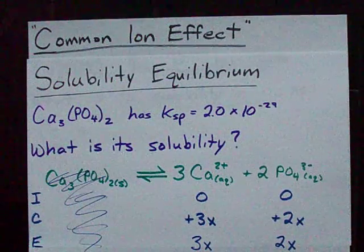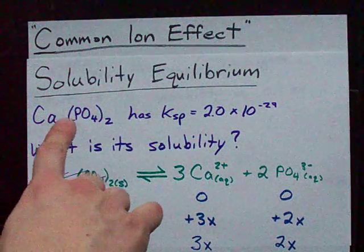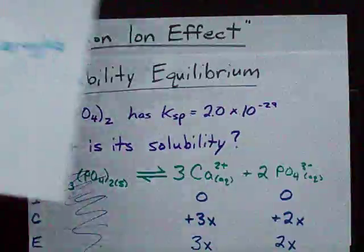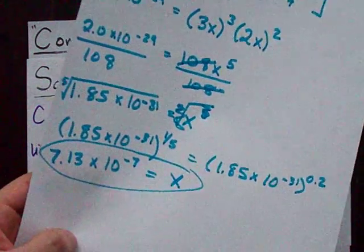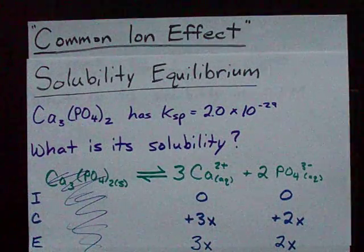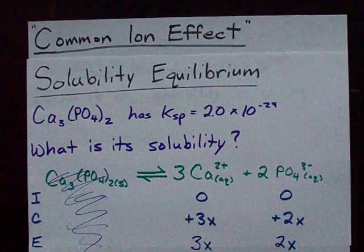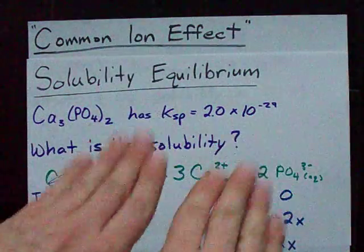In a previous video, I showed that the solubility of calcium phosphate is 7.13 times 10 to the minus 7 moles per liter, because we were given Ksp. That's in pure water.